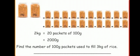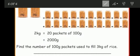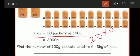Here they give a 2 kilogram rice pack. 1 kilogram means we split 10 packets of 100 grams. 2 kilograms of rice pack means we can split 20 packets of 100 grams. So 20 into 100, the answer is 2000 grams. So this is the conversion of weight from kilogram to gram.